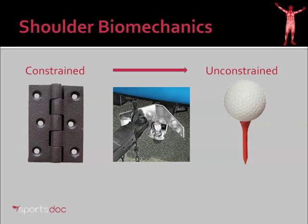In order to do that, I think we should look at three everyday examples or analogies for the different types of joints in the human body. To the left here you see a door hinge, which is the most constrained of the three examples because it really only moves in one plane as the hinge bends back and forth.